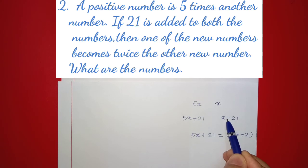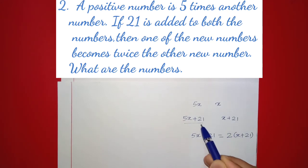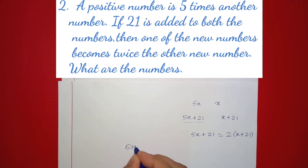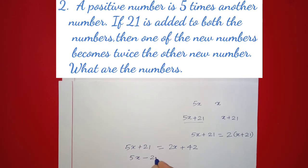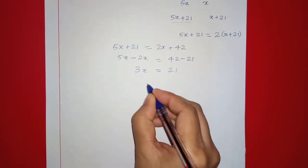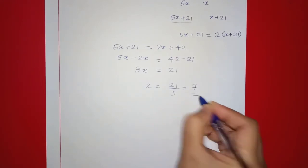One of the new numbers becomes twice the other: 5x plus 21 equals 2 into (x plus 21). Expanding: 5x plus 21 equals 2x plus 42. Rearranging: 5x minus 2x equals 42 minus 21, so 3x equals 21, therefore x equals 7.